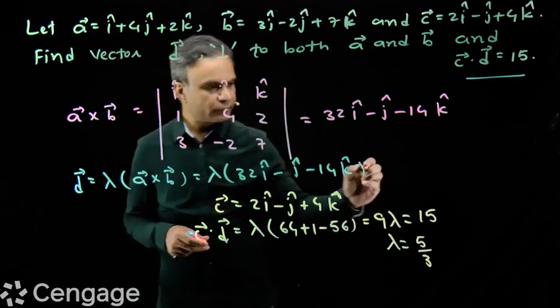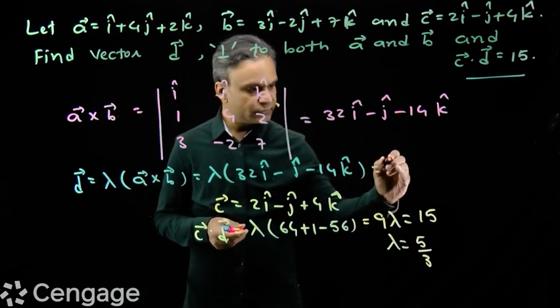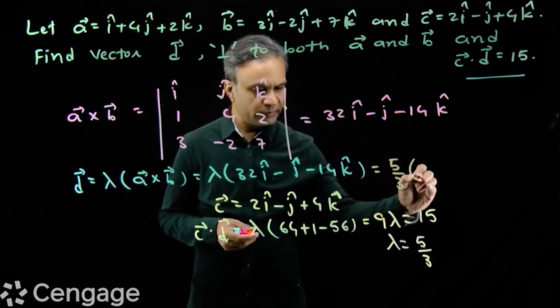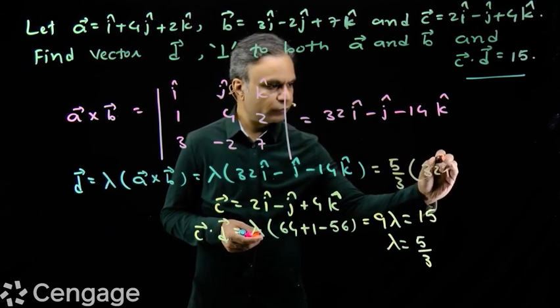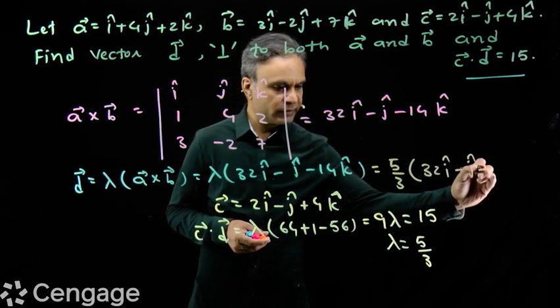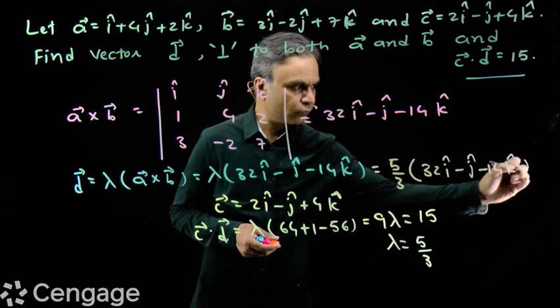Now we put the value of lambda here. We get vector d as 5 over 3 into 32i minus j minus 14k.